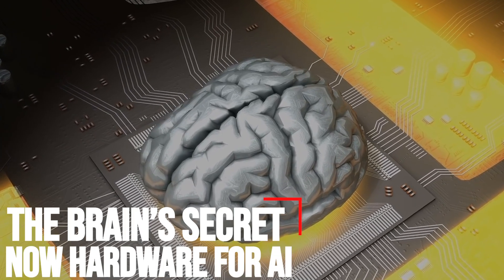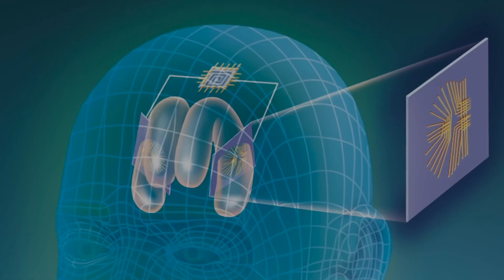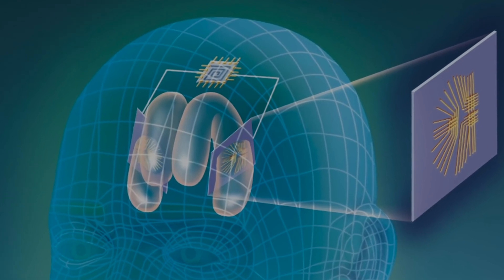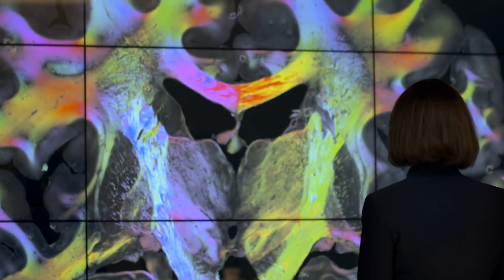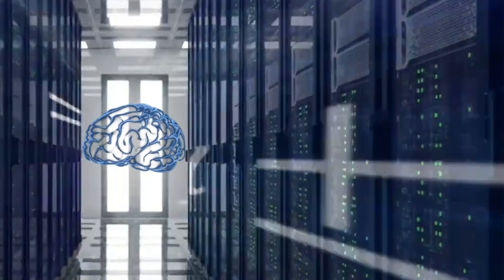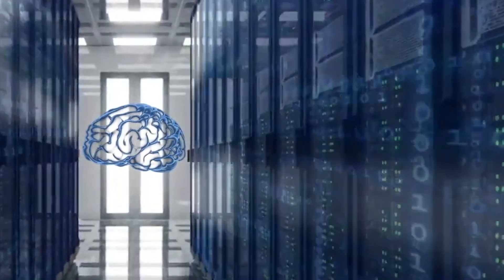The Brain's Secret, Now Hardware for AI. When the human brain learns something new, it adapts. But when artificial intelligence learns something new, it tends to forget information it already learned. As companies use more and more data to improve how AI recognizes images,